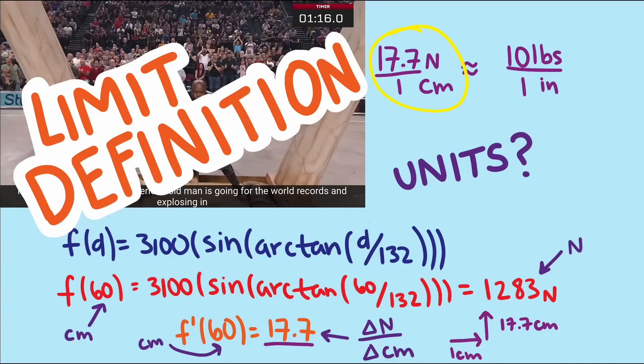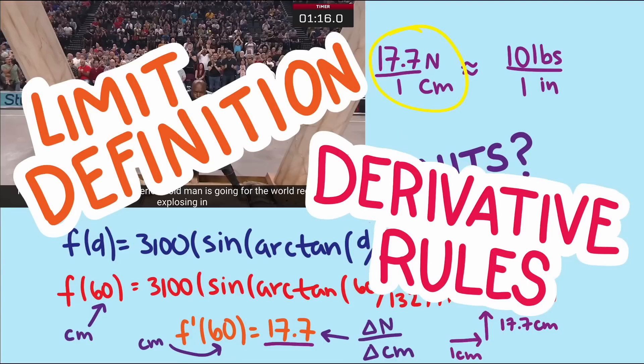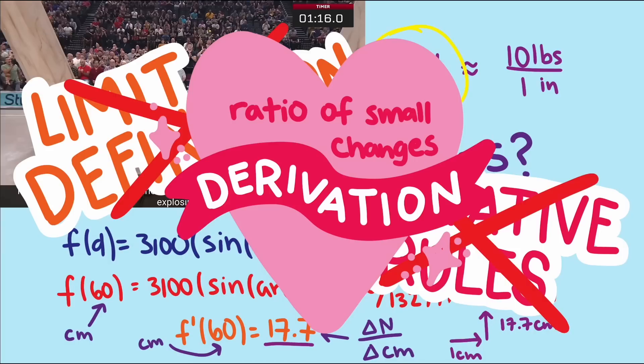Sure, we could have used the limit definitions or derivative rules to help us find the value, but when it comes to interpreting and using the derivative, it is the ratio of small changes that comes to the rescue more often than not.